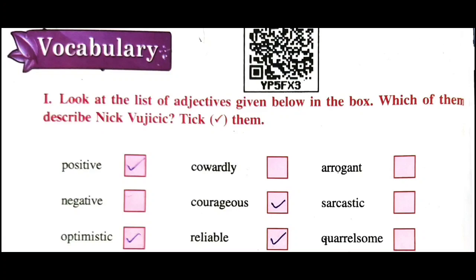Welcome back dear students. In the 10th class English textbook, Unit 1, 'Attitude is Altitude' - every success story is also a story of great failures. We previously discussed reading comprehensions, important passages, their questions and answers. Now we will discuss the vocabulary of Unit 1. This is the first time we are looking at the exam vocabulary.